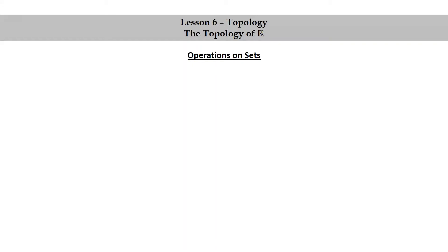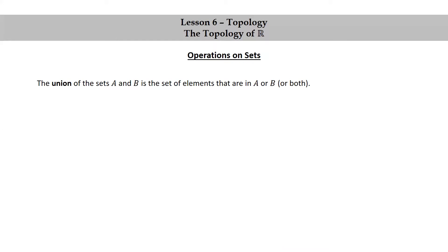Operations on sets. The union of the sets A and B is the set of elements that are in A or B or both.